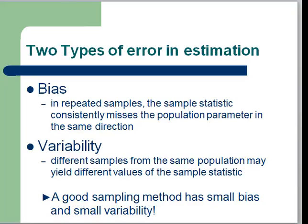This leads us to two types of errors that can occur in estimation. We can have bias in our sample statistics. Bias is this characteristic: in repeated samples, the sample statistic consistently misses the population parameter in the same direction.